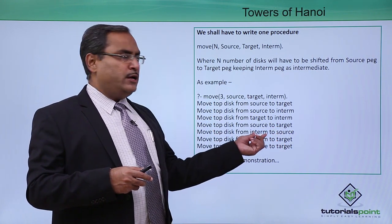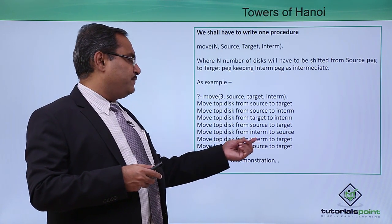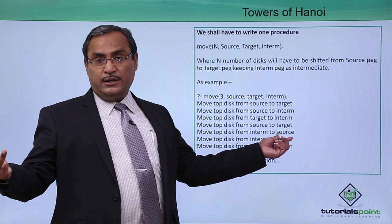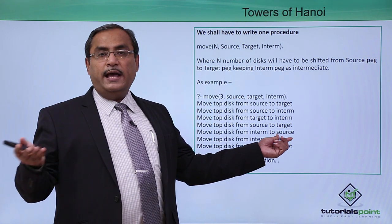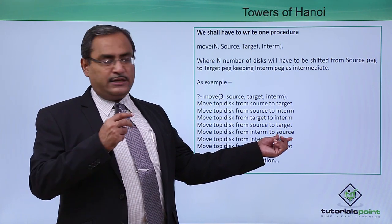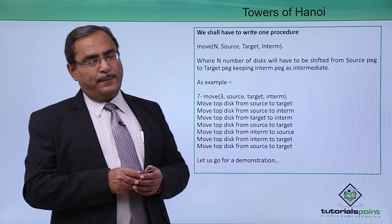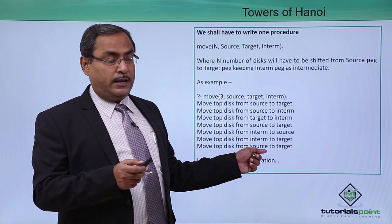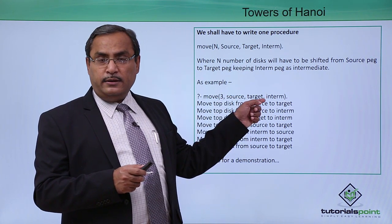Then the topmost disk from intermediate to source will be moved, and then the topmost disk from intermediate to target — the intermediate size disk goes to the target. The target now has two disks: the largest at the bottom and the intermediate one on top. The smallest is at the source, so from source to target the last disk will be moved. That is the complete output.